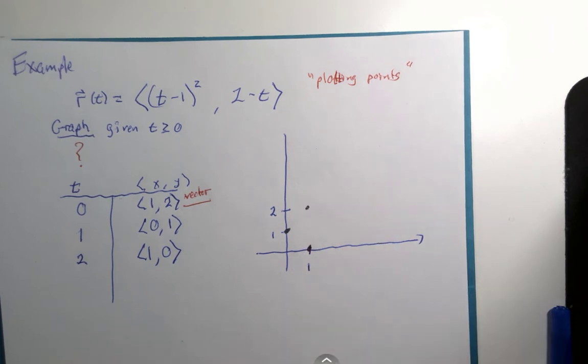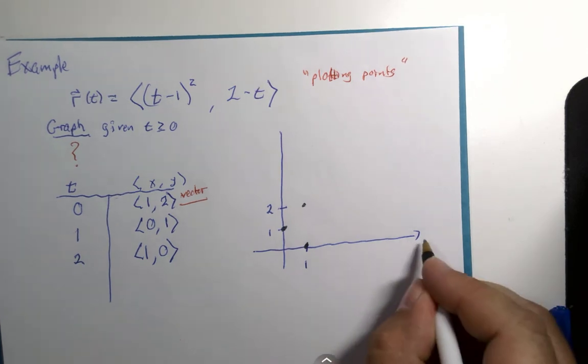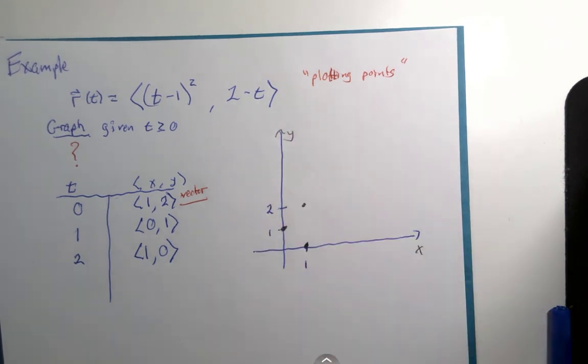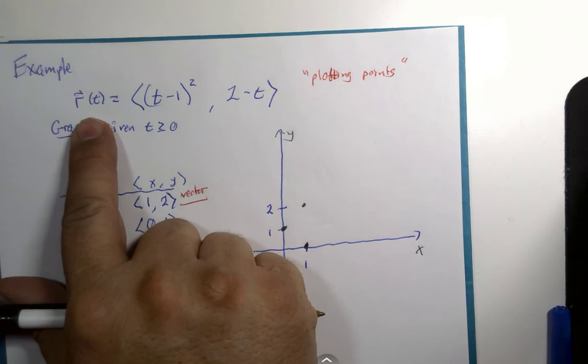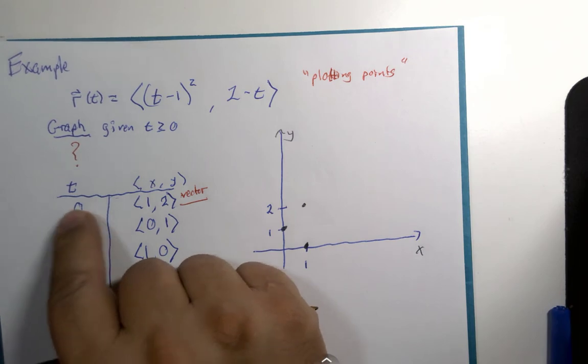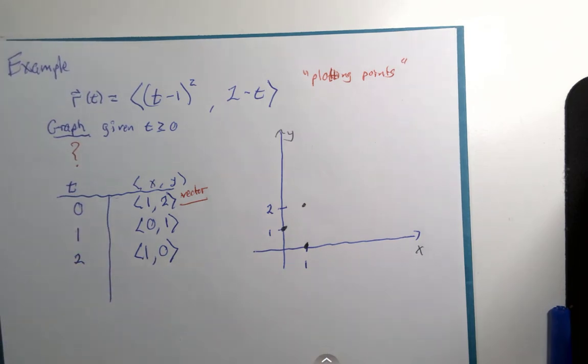You should know if I were in a before calculus class I might even say this isn't a function. The problem is the definition of function is that for every input there's one output. T is the input, not x. So for every time value there's only one point that comes out of it.